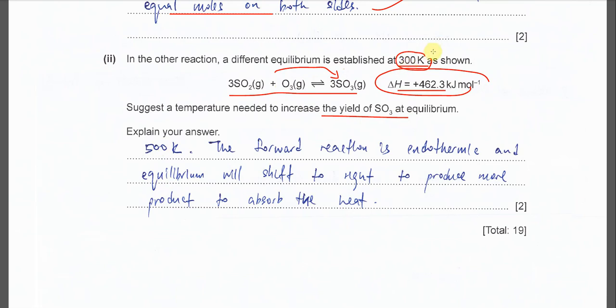We can suggest any temperature as long as higher than 300, so let's say 500 Kelvin. Then you just explain because the forward reaction is endothermic and the equilibrium will shift to right to produce more product, to absorb the heat that introduced. That's all for this question, thank you.